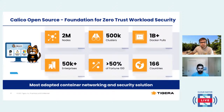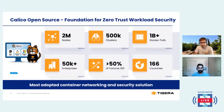The core design principles of Calico leverage best practices of cloud-native design patterns combined with standards-based network protocols, trusted by the largest internet carriers. What you get is exceptional scalability, running at scale in some of the largest Kubernetes deployment enterprises.